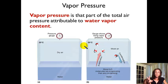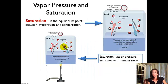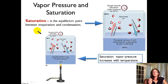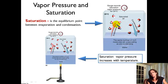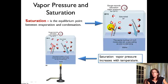Before we discuss relative humidity, we need to explain the concept of saturation — when the air is at equilibrium with the water. At saturation, we can't add any more water vapor to the air; the same amount of water is evaporating as is condensing, so the water vapor content of the atmosphere is no longer increasing. We call this the saturation vapor pressure.